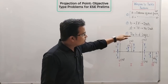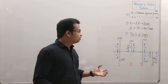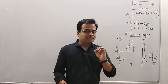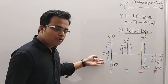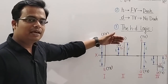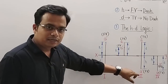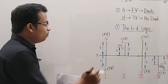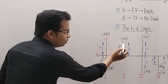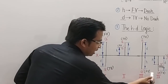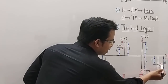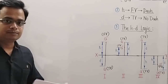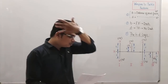This is the most important logic — the crux and entire summarization of projection of a point in all four distinct quadrants. In the first quadrant, H and D are both above the XY line. Second quadrant: D above and H below — exactly opposite. Third quadrant: H and D both below. In the fourth quadrant, H is above and D is below. Always associate the front view with a dash, and no dash with the top view.